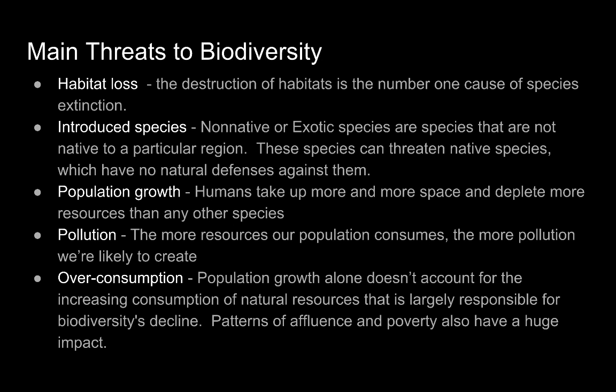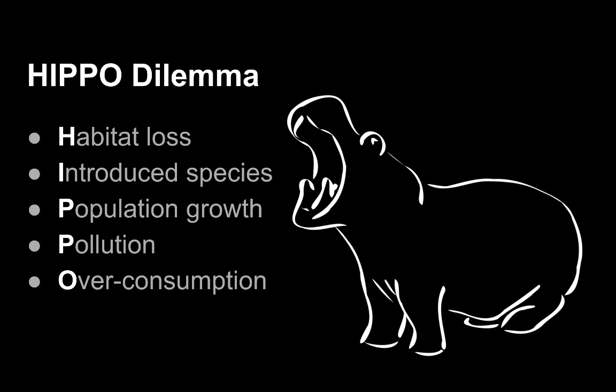A way to remember the main threats to biodiversity is something called the HIPPO dilemma. H stands for habitat loss, I for introduced species, P for population growth, P for pollution, and O for over-consumption.